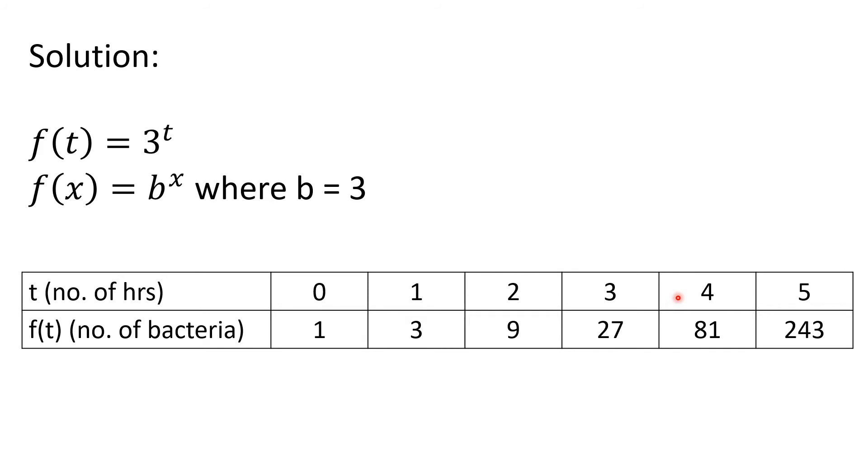Then 3 cubed equals 27, 3 to the 4th equals 81, 3 to the 5th equals 243, and so on. Notice that as X increased by 1 unit only, that is constant, the number of bacteria, or Y, increase rapidly.